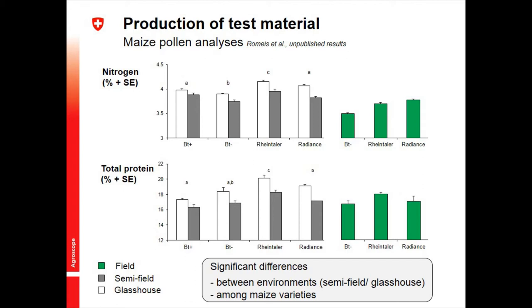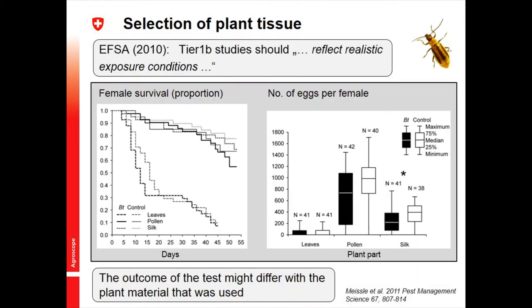A plant consists of many different parts — roots, stem, leaves, pollen, silk, kernels, and so on. What am I going to test? EFSA tells us the test should reflect realistic exposure conditions, which sounds great, but what does that mean? For example, we were interested to see whether the adult corn rootworm beetle is sensitive to the Cry3 toxin expressed in BT maize. In the field, this beetle feeds on pollen, silk, and also leaves — so I don't know what the realistic exposure scenario is, and that's why we tested everything.